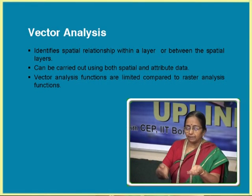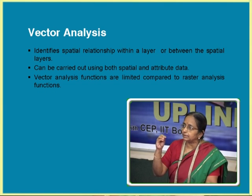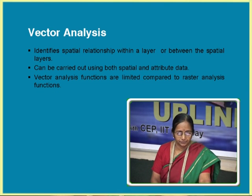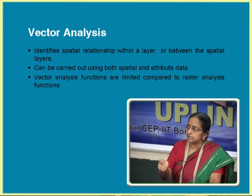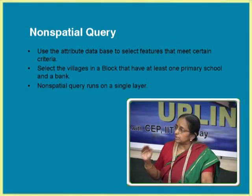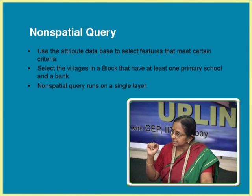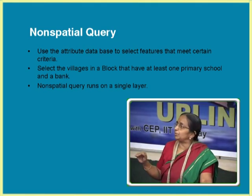In vector, we can have layers, and the way data gets stored in a vector data model is in terms of point, line, area, etc. When you want to work out any analysis in vector using multiple layers, one of the simplest available queries for vector data is the non-spatial query, because vector is very strong in the attribute database. Any point or line automatically has a database where you can add attributes. Non-spatial query is one of the easiest analysis methods and maximum used in a GIS.